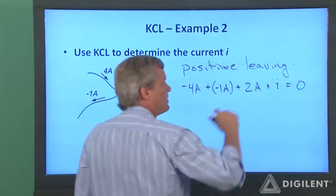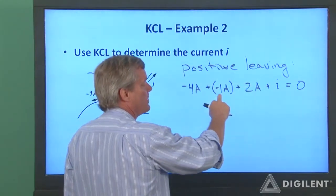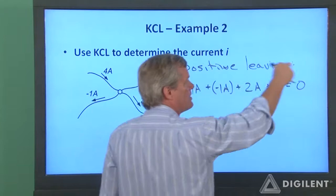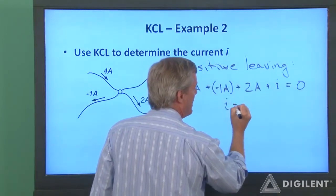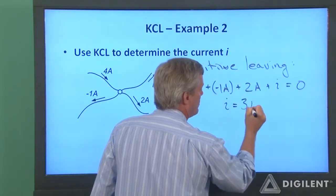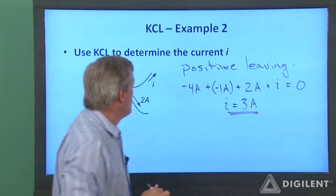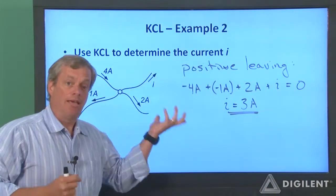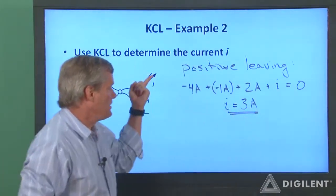Now we just have to solve this equation for I. Minus 4 plus minus 1 is minus 5, plus 2 is minus 3. If I take the minus 3 over to that side, I is equal to 3 amps. So the indicated direction for I is correct. It's 3 amps leaving that terminal.